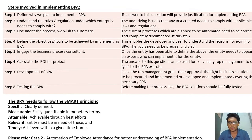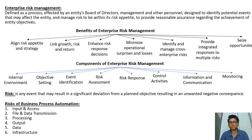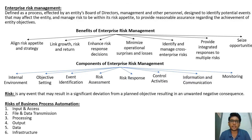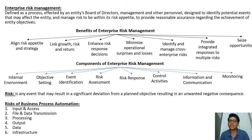Please refer to Case 2 in the book — automation of employee attendance — for better understanding of BPA implementation. Next, Enterprise Risk Management (ERM) is defined as a process affected by the entity's board of directors, management, and other personnel, designed to identify potential events that may affect the entity and manage risk within its risk appetite to provide reasonable assurance regarding achievement of entity objectives.